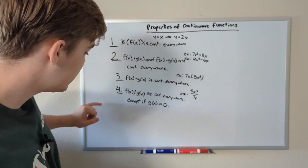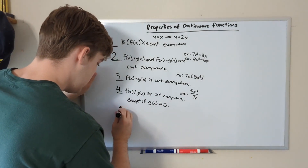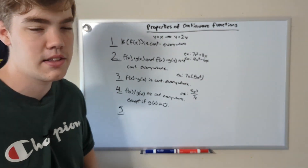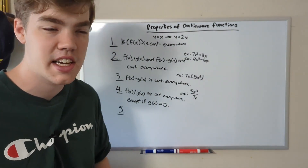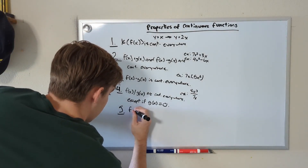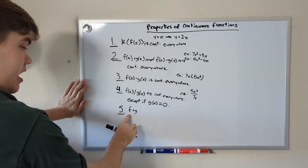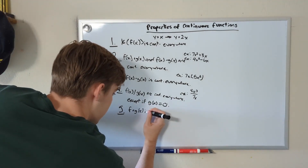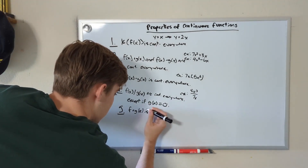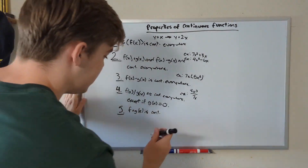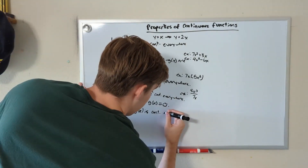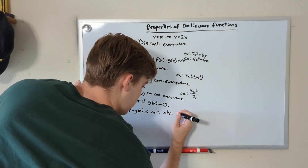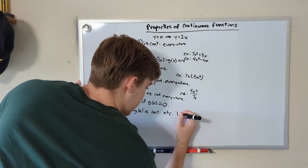The last property is rule number five, and it's a little more confusing, so we're going to do an example. f(g(x)) — that is, f of g of x — is continuous at any point c, if f is continuous at c.